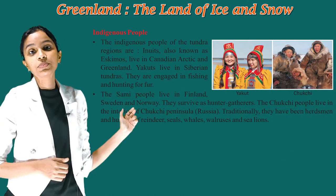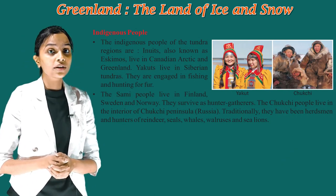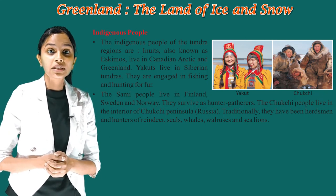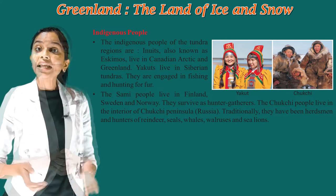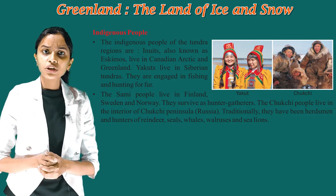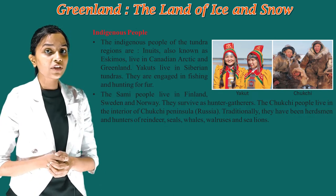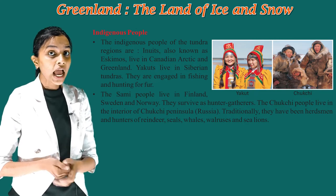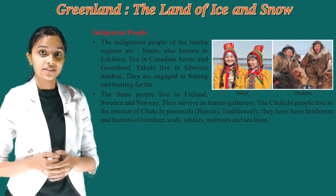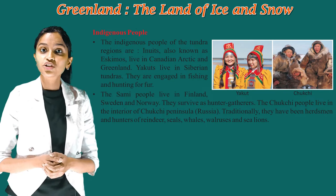The indigenous people of the Tundra region are Inuits, also known as Eskimos, who live in Canadian Arctic and Greenland. Yakuts live in Siberian Tundras. They are engaged in fishing and hunting for fur. The Sami people live in Finland, Sweden, and Norway. They survive as hunter-gatherers.